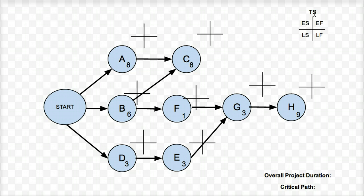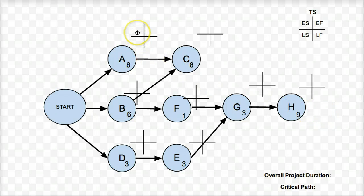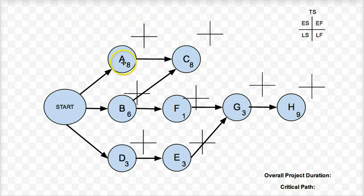Let's tackle this problem. I'm going to start with my first pass from left to right, starting from the start and moving right until I get to the end nodes. On this first pass, I'm just going to be looking at the early start and early finish — the top two quadrants of each of those crosshairs. Starting with task A: A can start immediately, so that can start at day zero, as can B and D.